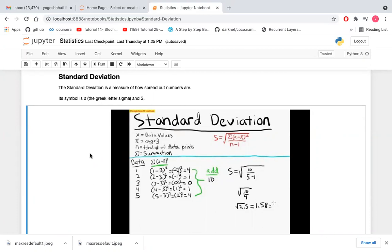Standard deviation is represented by sigma for the population standard deviation and s for the sample standard deviation. So let's understand by using one example how to calculate standard deviation.